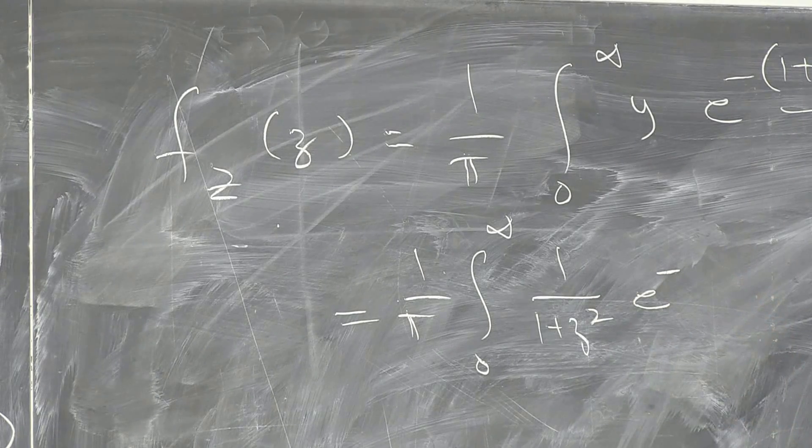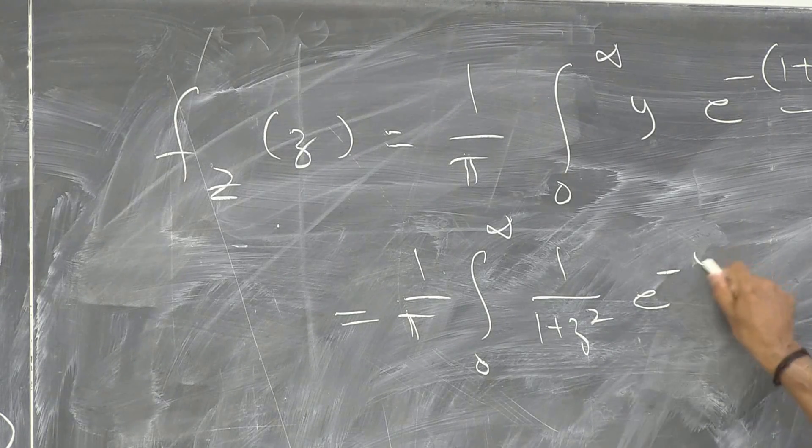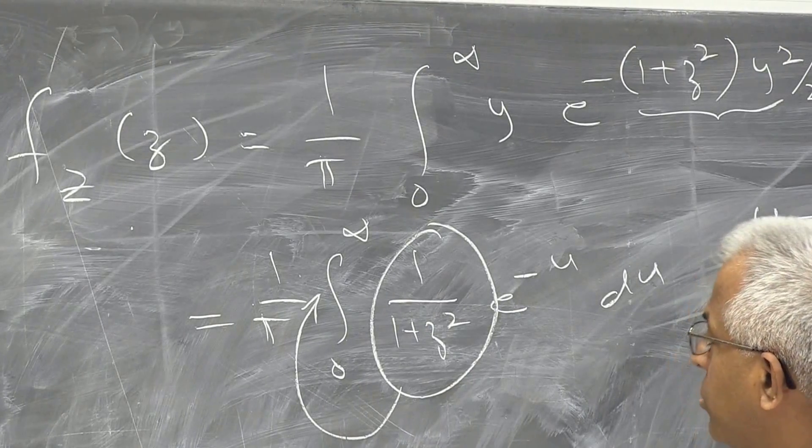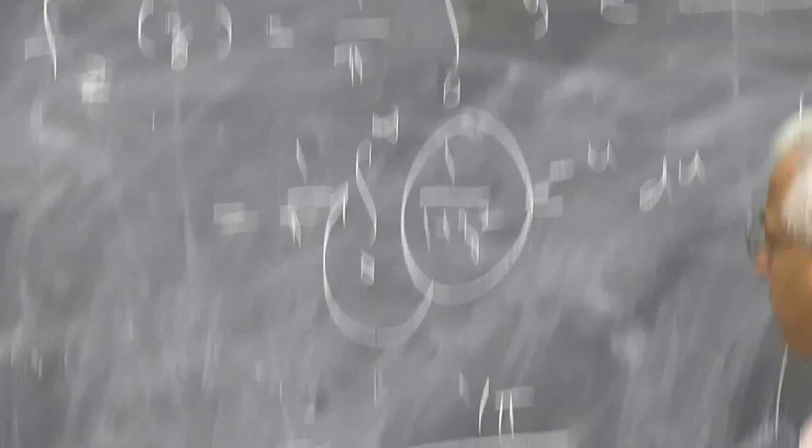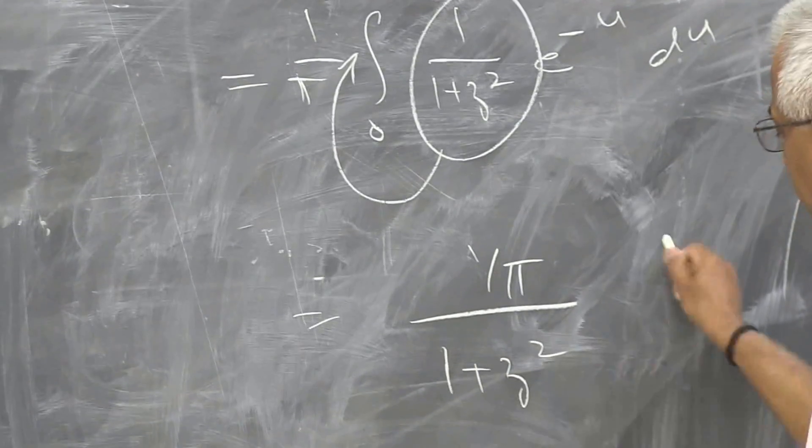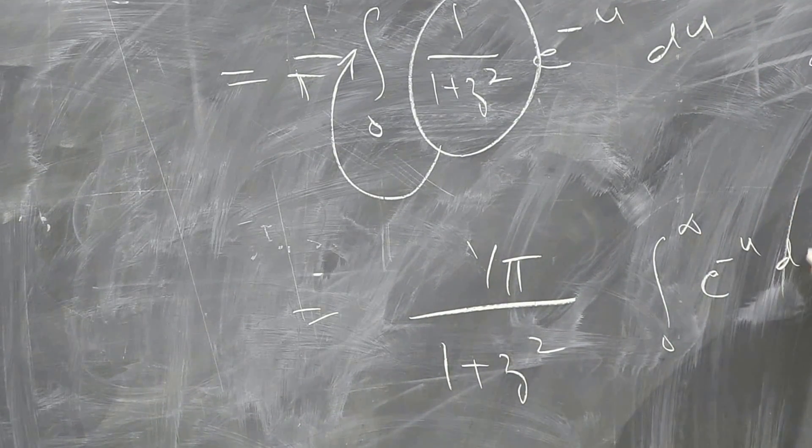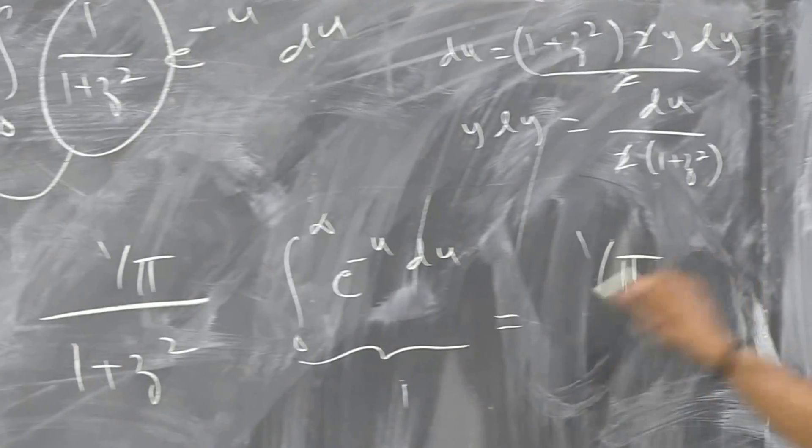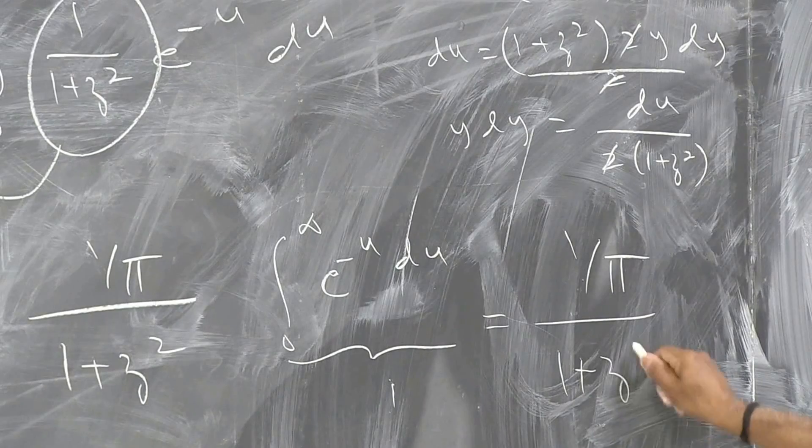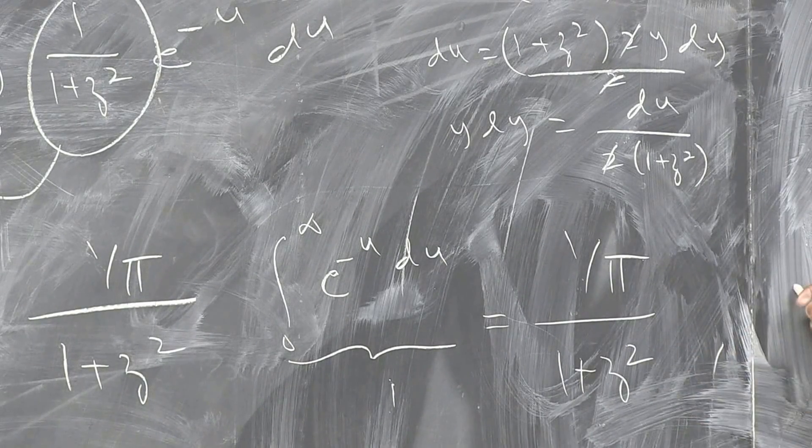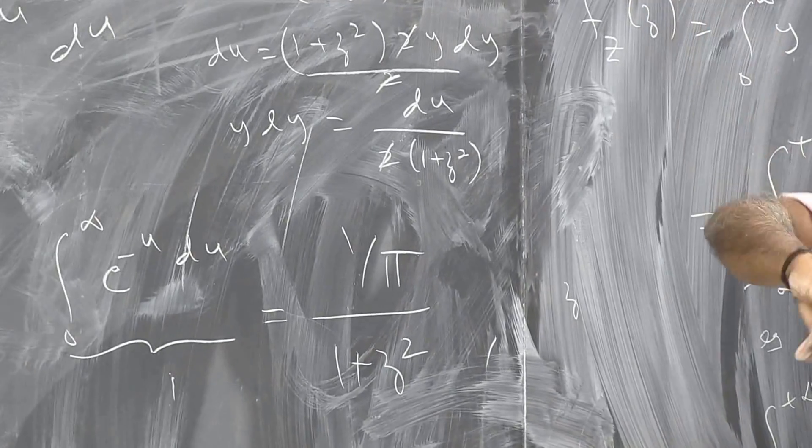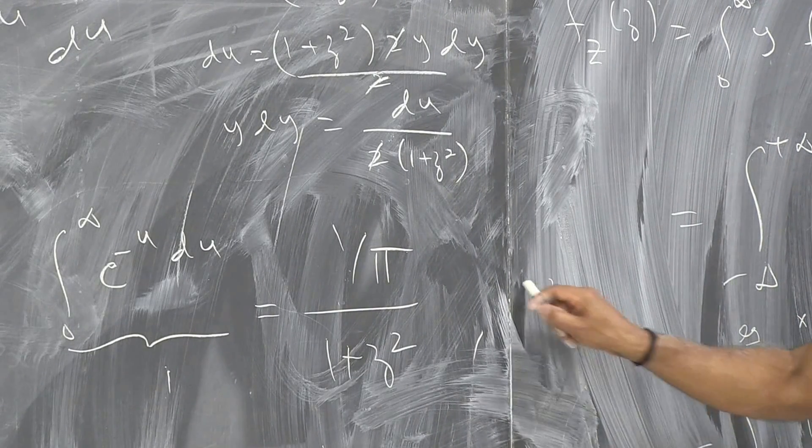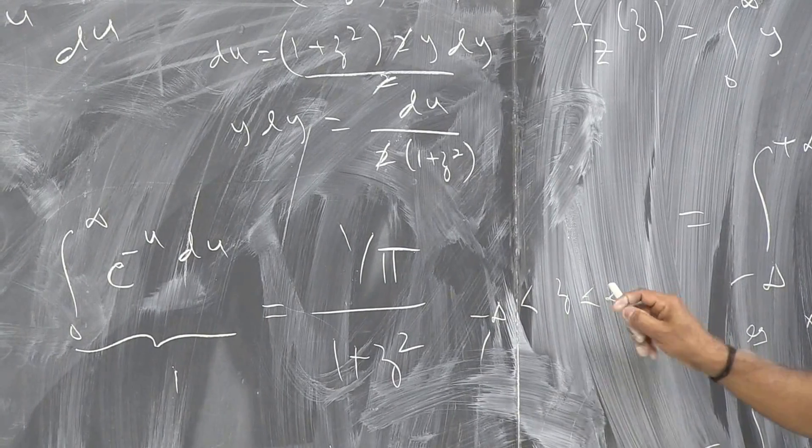So it is, y dy is, so this now reads 1 over π. Limits are the same when y is 0, u is 0, y is infinity, u is infinity. So we have y dy. Y dy is du by 1 plus z squared. Then you have e raise to minus u du, right? This goes outside because it is a constant. So you get the answer to be, but e raise to minus du is 1. So the answer is 1 over π divided by 1 plus z squared. Anybody remembers this form? Cauchy.